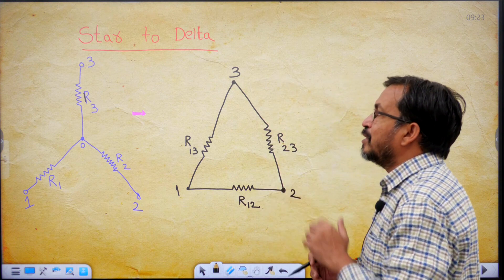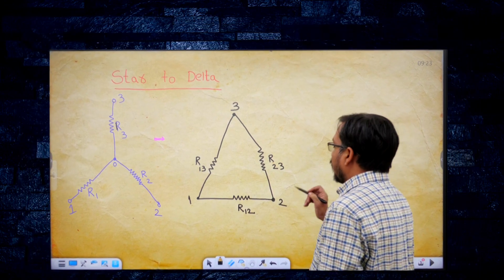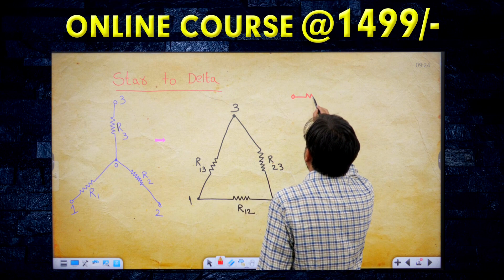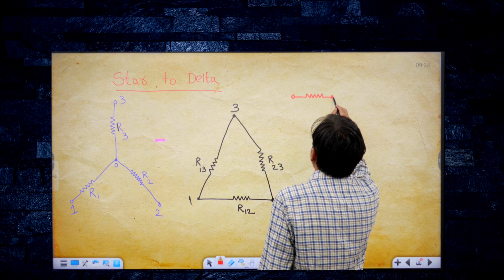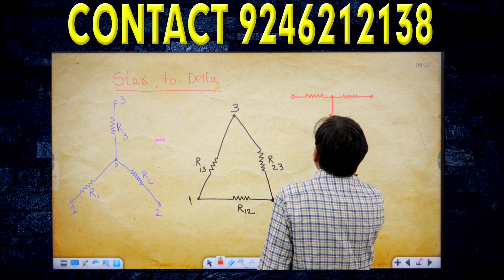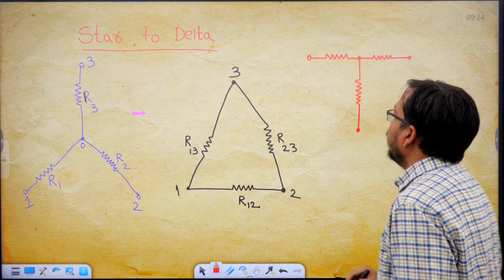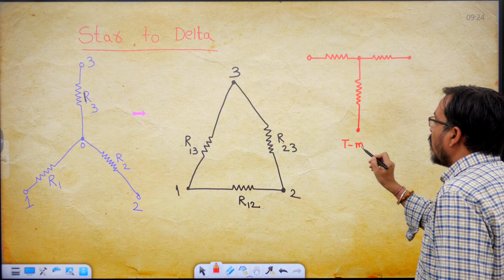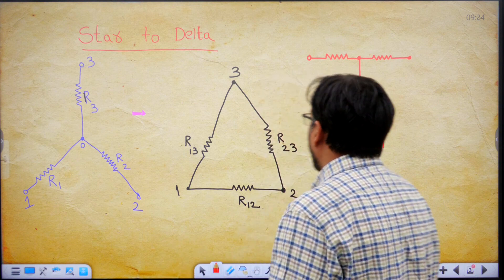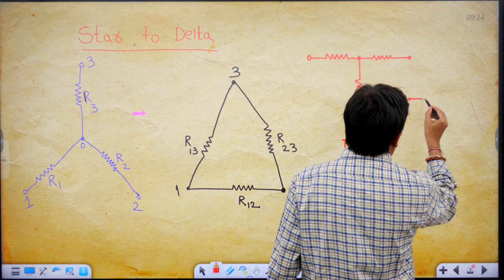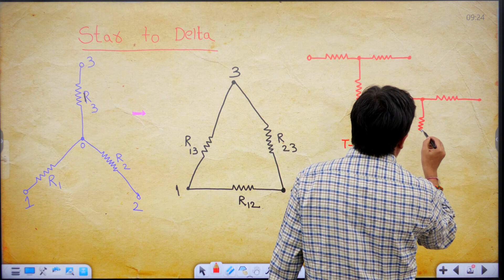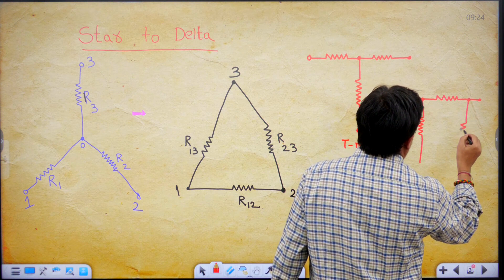Star connection is also known as T-model. Delta connection is also known as pi-model. This is the pi-model.